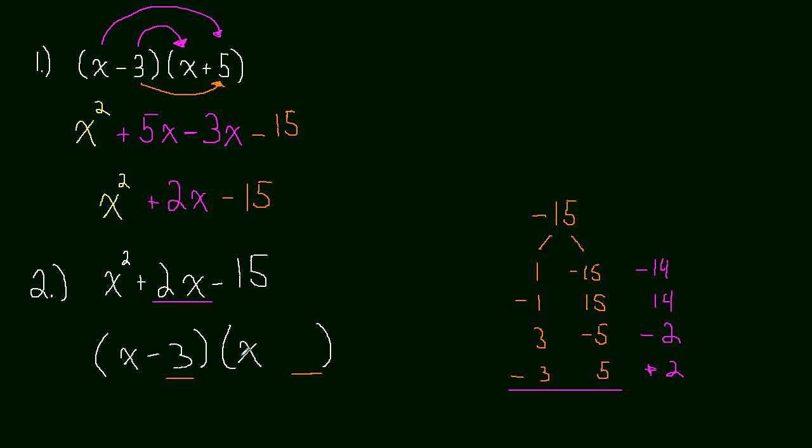And so that tells us that negative 3 and 5 are the correct numbers to place in these new binomials. So this is going to be minus 3 and plus 5. We knew that because we know that negative 3 and positive 5 multiply to negative 15. That's what we need to get this term. And we also know that they add up to make positive 2, and that's what we need to get this term. So that's how we go about factoring quadratics.